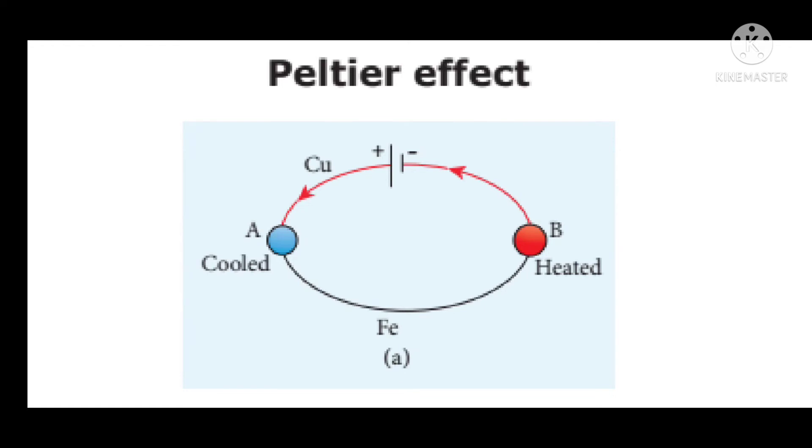In a thermocouple, when an electric current is passed, what will happen? Heat is evolved at one junction and heat is absorbed at another junction. This phenomenon is known as Peltier Effect. Here, at junction A, it is written as cooled and at junction B, it is written as heated.